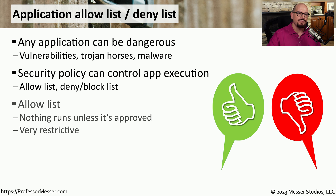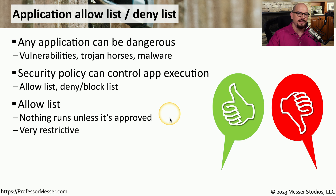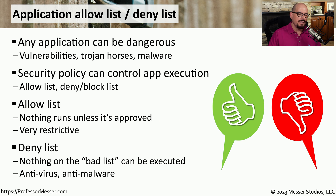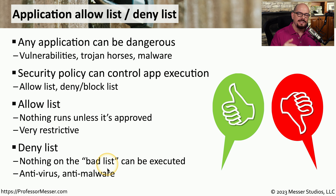There are two different philosophies for allow lists and deny lists. With an allow list, nothing runs unless it is specifically approved — only what's on the list is able to run on that system. In other environments, you might have more flexibility with a deny list. A deny list works the opposite way: everything can run except the things specifically written as unable to run. A good example of a deny list is antivirus or anti-malware software, which allows everything to work until it identifies a known bad virus or malware, and then blocks that particular application.